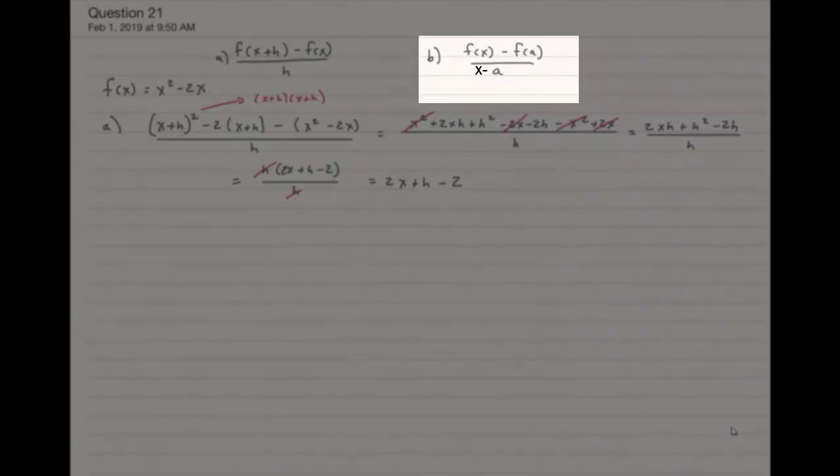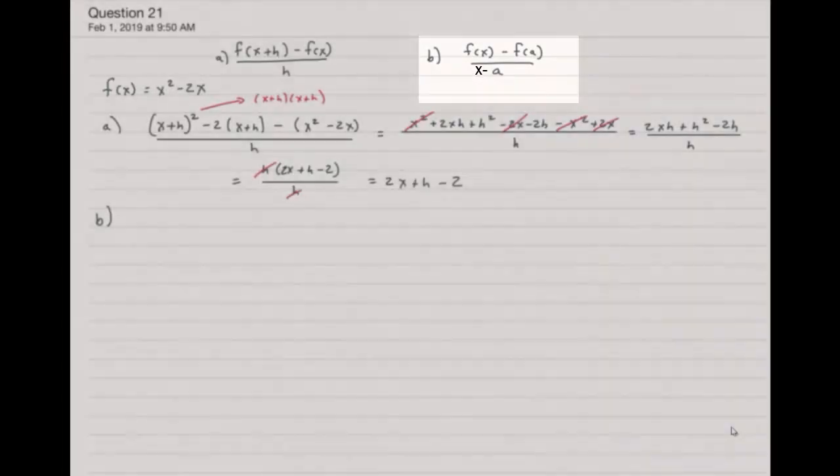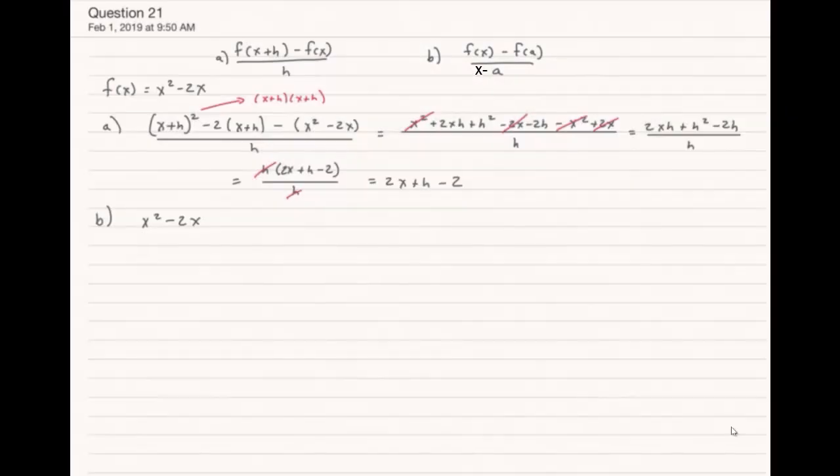For part b, we are now using our original f(x) with just x as the input, and then subtracting from that the same function but instead of x we're using a. So in the denominator we have x - a. We're going to have the same thing as part a where the h always gets divided out. In this case, the x - a is going to be divided out. So let's see how that can happen.